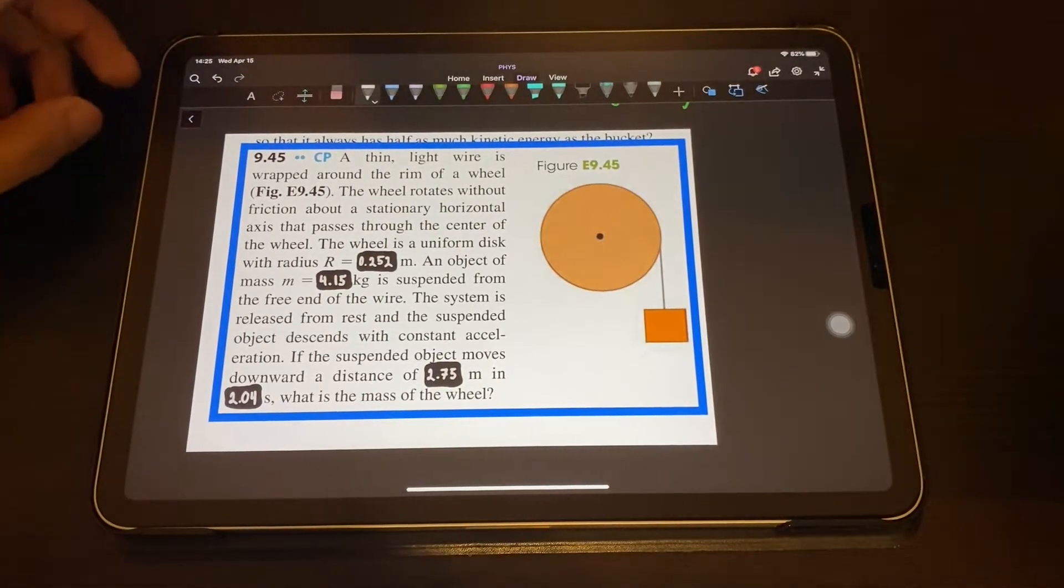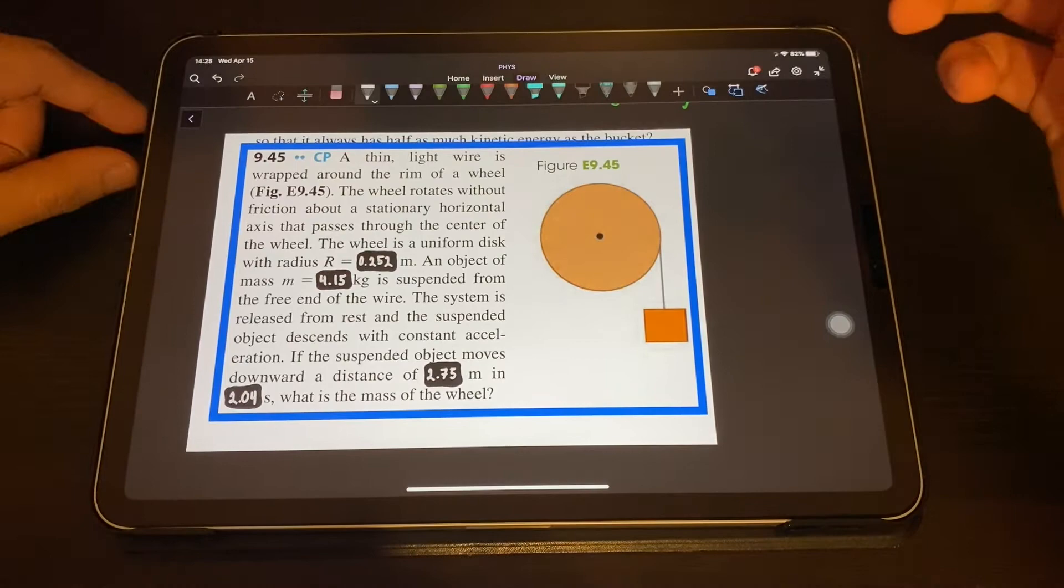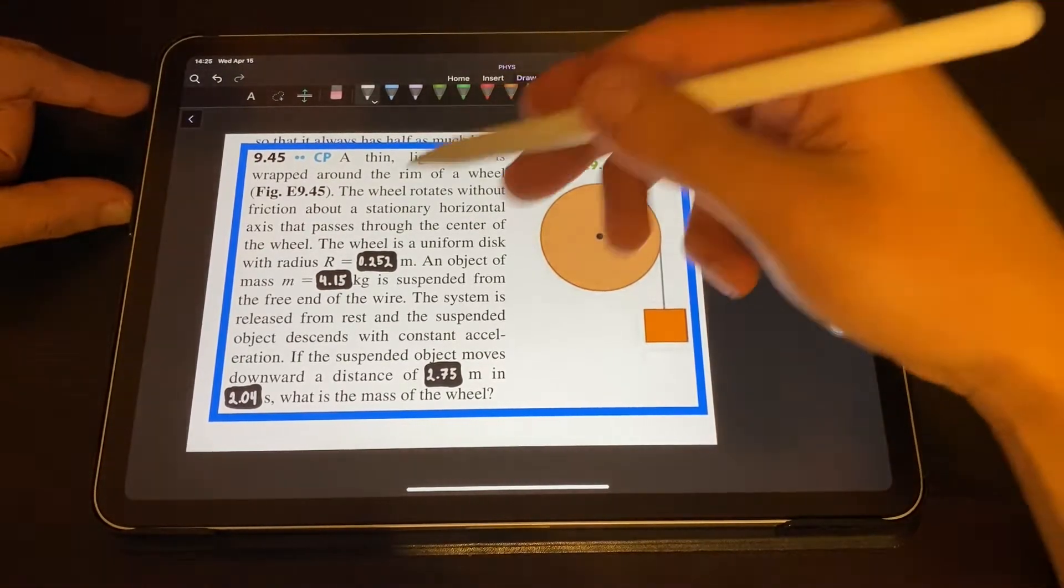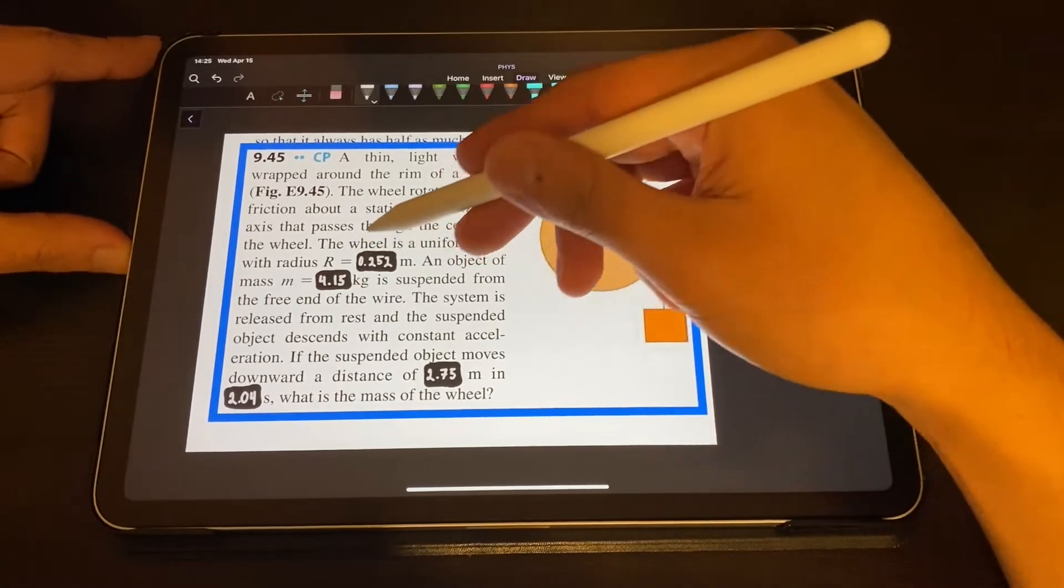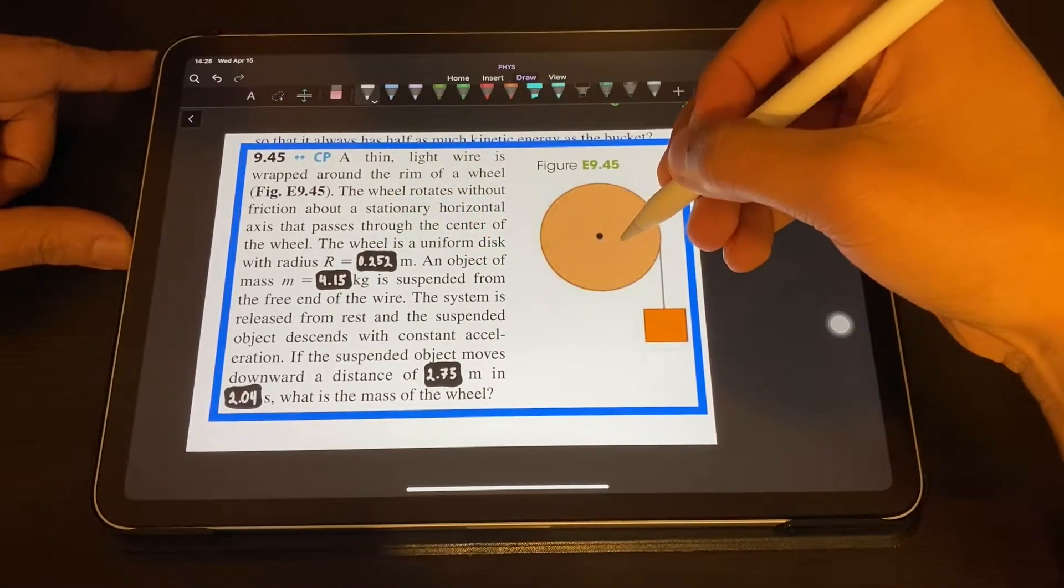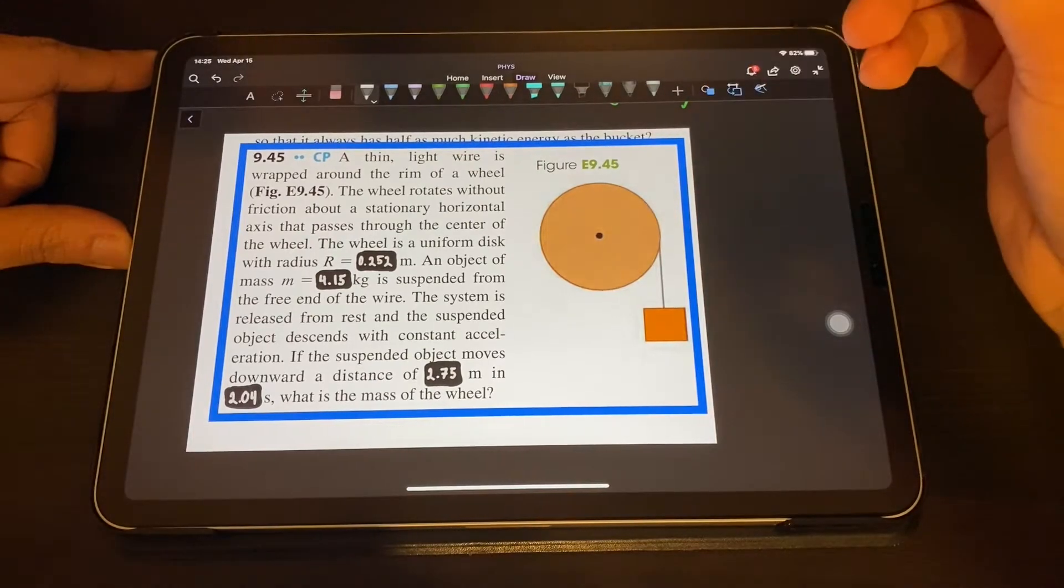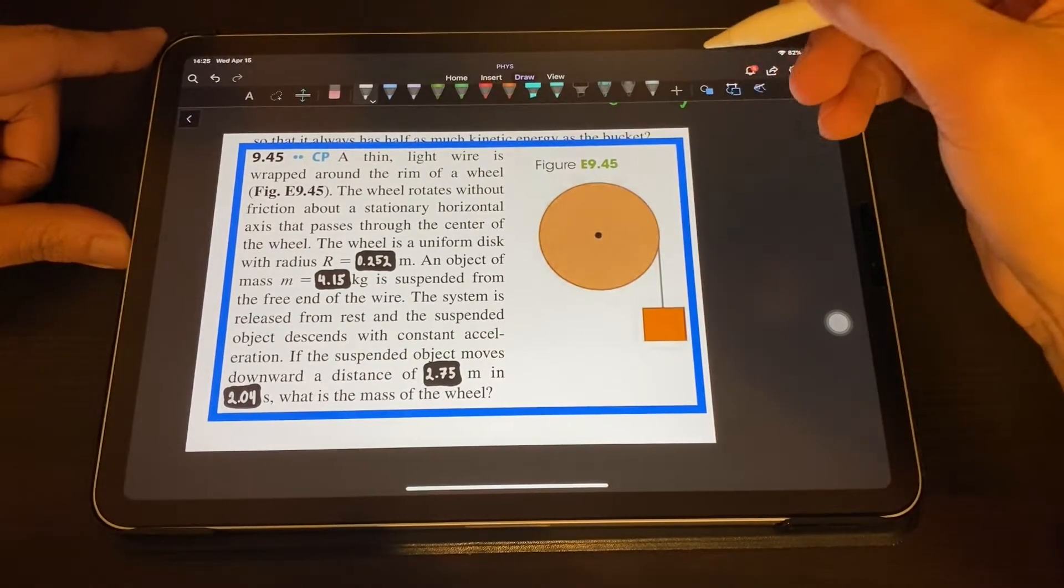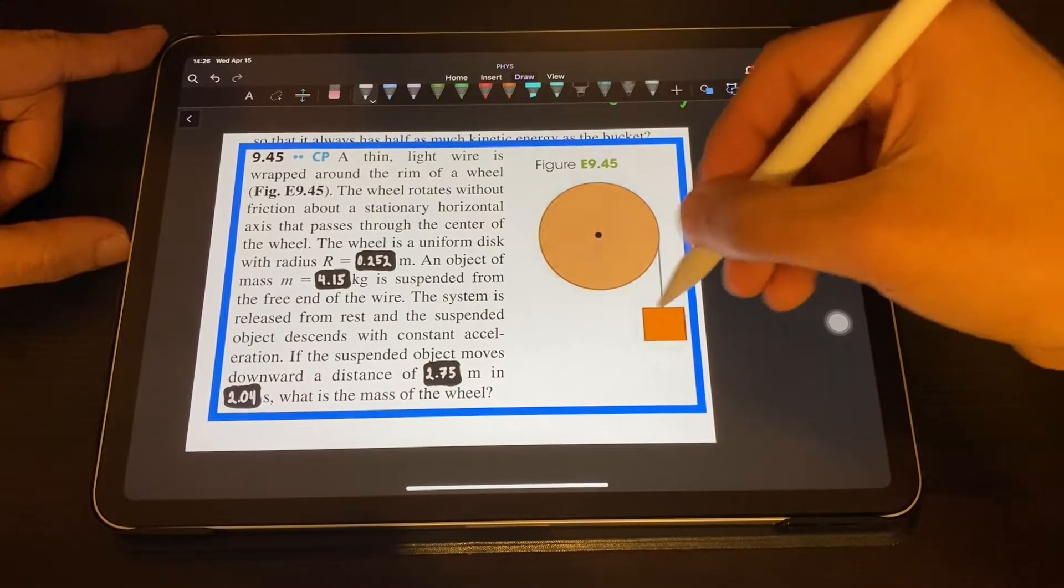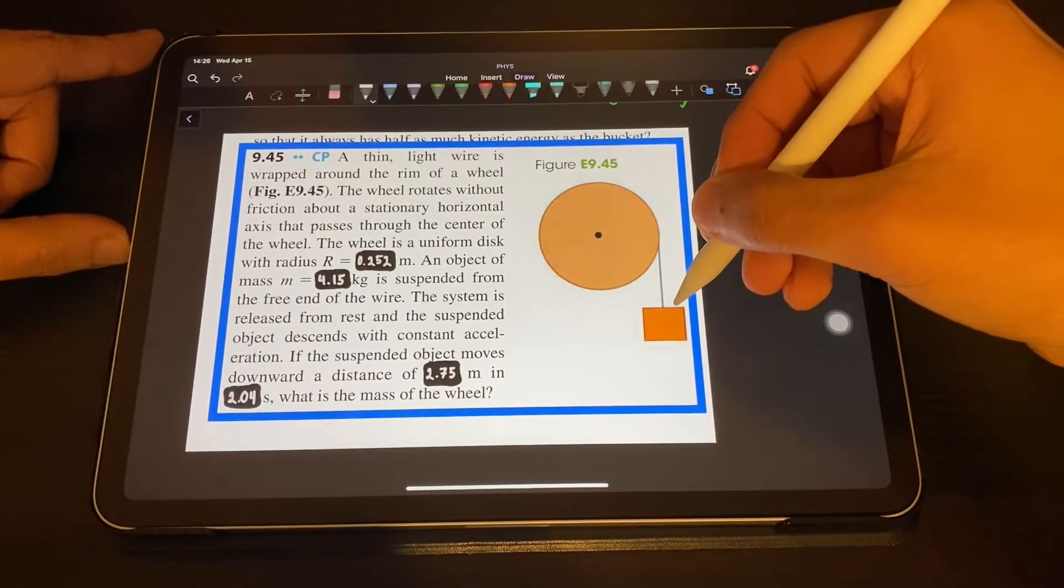Hello guys, we're gonna solve this problem. You can take some time to read it. We have the radius of 0.252 meters and the object has a mass of 4.15 kilograms.